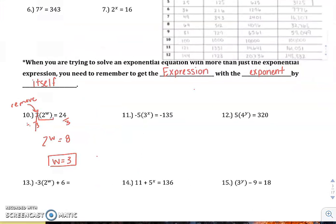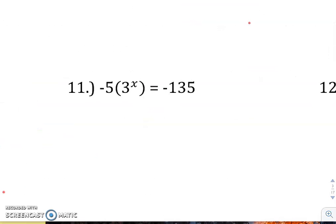Similarly, number 11, negative 5 times 3 to the power of x equals negative 35. We'll divide both sides by that negative 5.